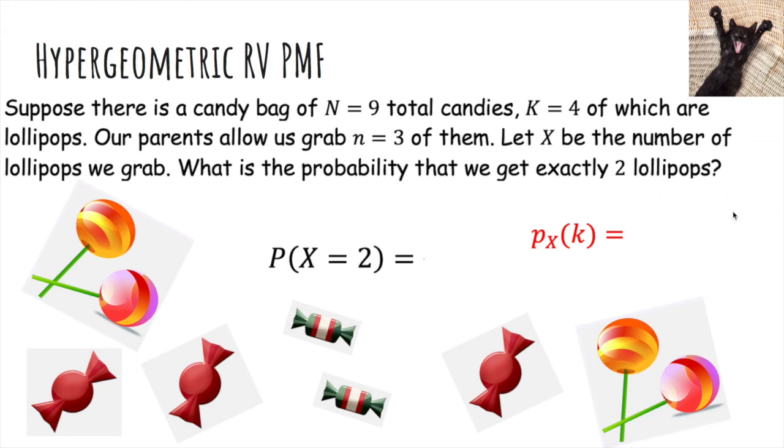Finally, we'll talk about the hypergeometric random variable. So suppose there's a candy bag of n equals nine total candies, four of which are lollipops. Our parents allow us to grab three of them. And X would be the number of lollipops to grab. What's the probability we get exactly two lollipops?